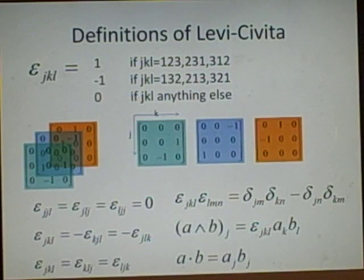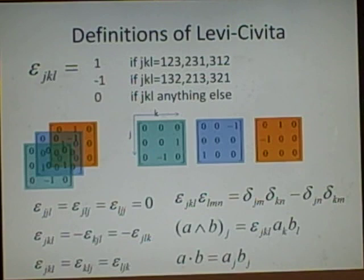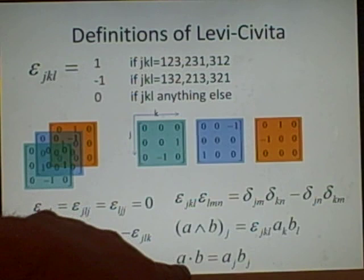The cross product, a cross b. Now j, this is the jth component. So we've got i, j, and k. We'll have epsilon jkl, ak, bl. So that's what that's equal to, which we'll find useful.